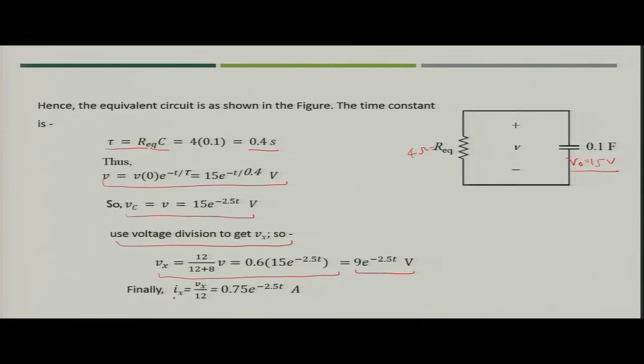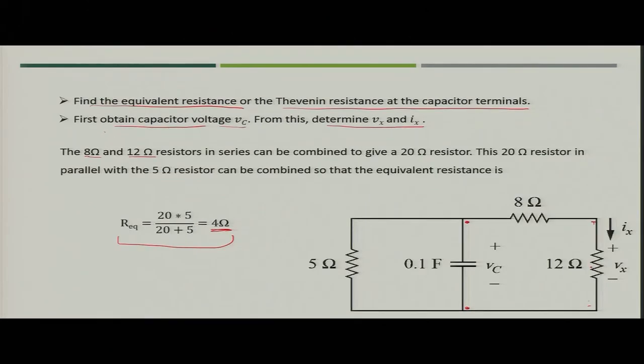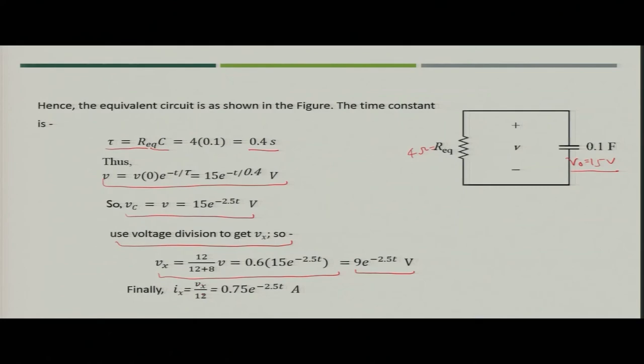Using voltage division, V_x is the voltage across the 12 Ω resistor: V_x = 12/(12 + 8) × V_C = 0.6 × 15·e^(−2.5t) = 9·e^(−2.5t) V. The current I_x = V_x/12 = 0.75·e^(−2.5t) A. With this we close today's session, having discussed the natural response of the RC circuit. In the next session we will discuss the natural response of the RL circuit.